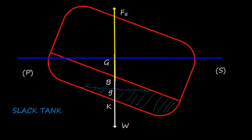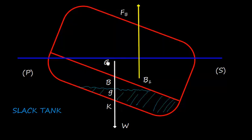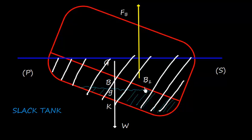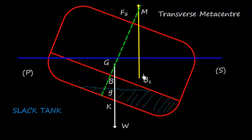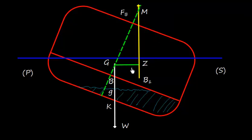Now if the ship rolls, what will happen? As the ship rolls, the liquid inside the tank also moves towards the lower side because liquid is free to move. This will increase the underwater area and underwater volume. So the center of buoyancy is shifted from B to B1, and the force of buoyancy and the weight downward get separated. This force of buoyancy cuts at some point which is called the transverse metacenter, and a righting lever is formed, called GZ.